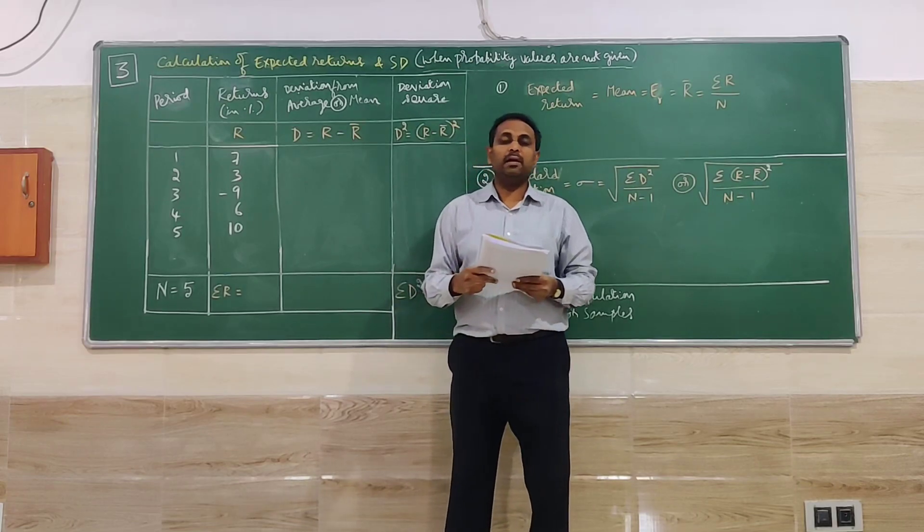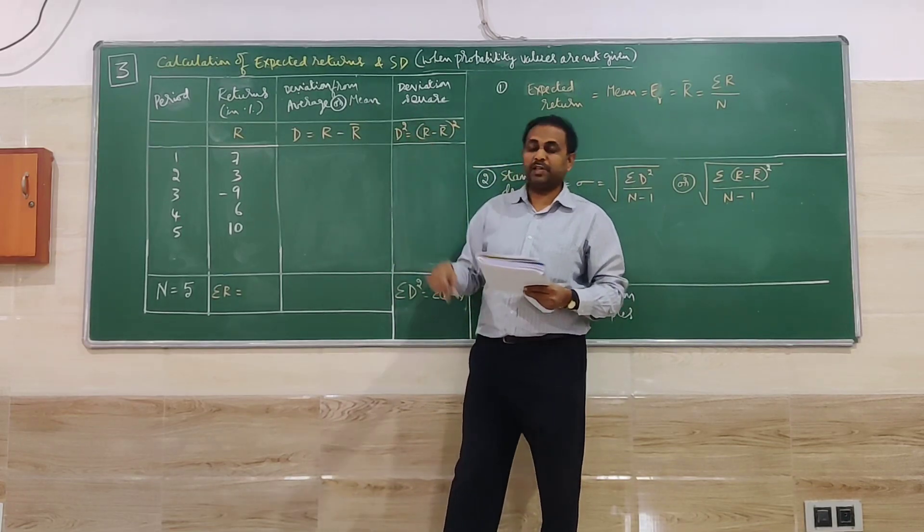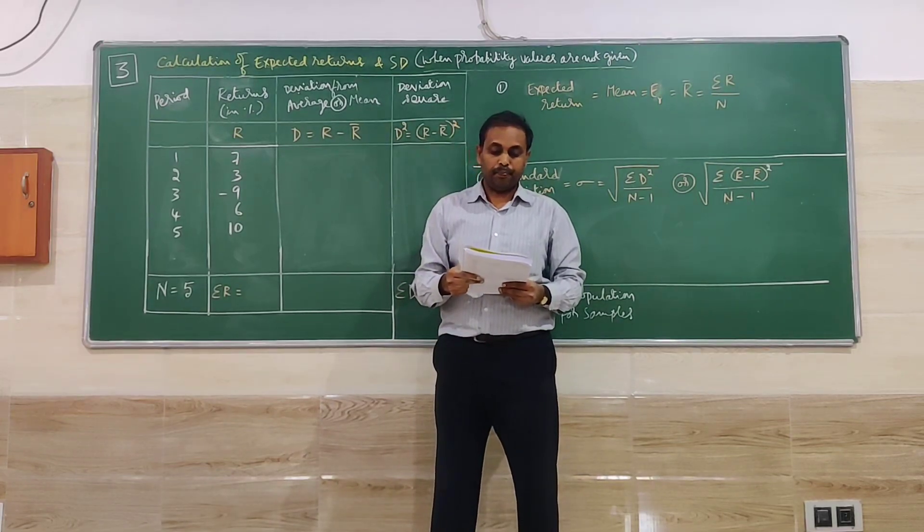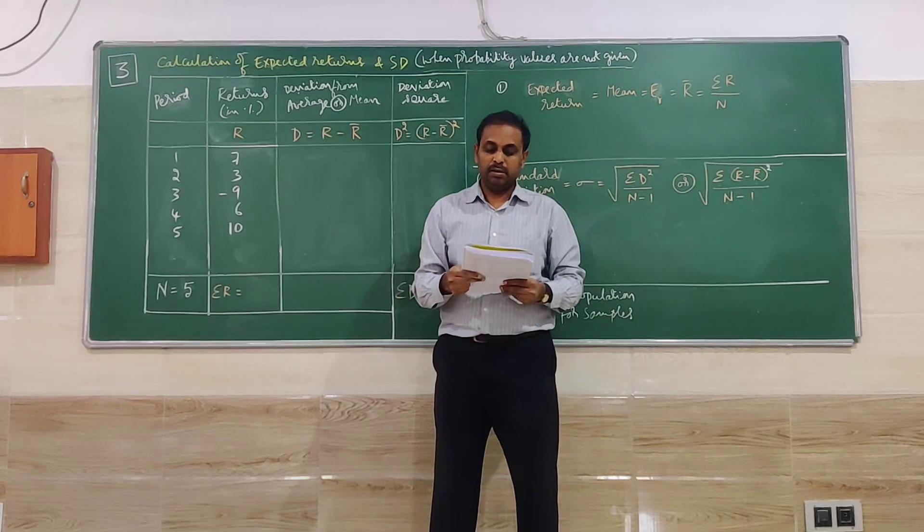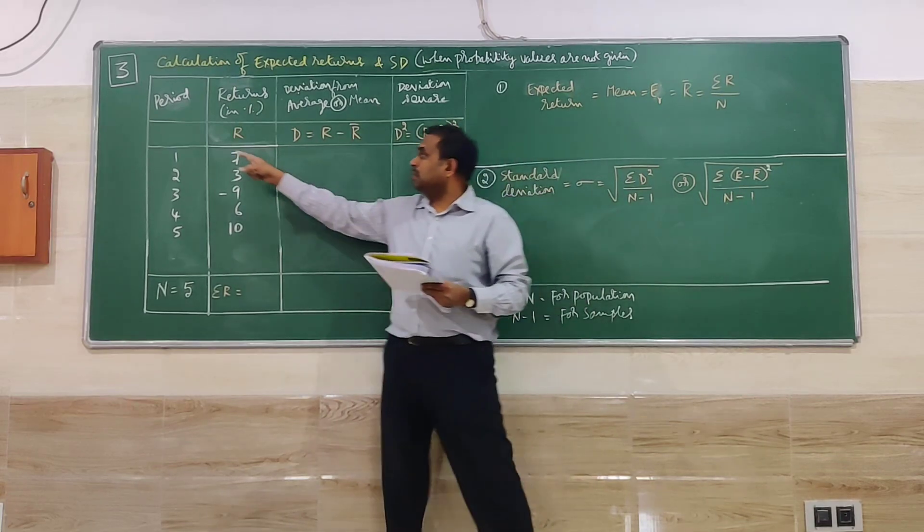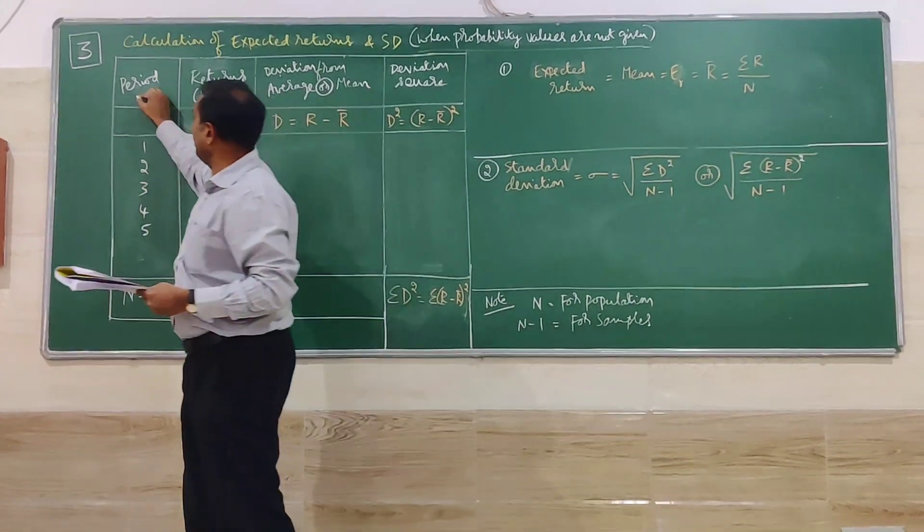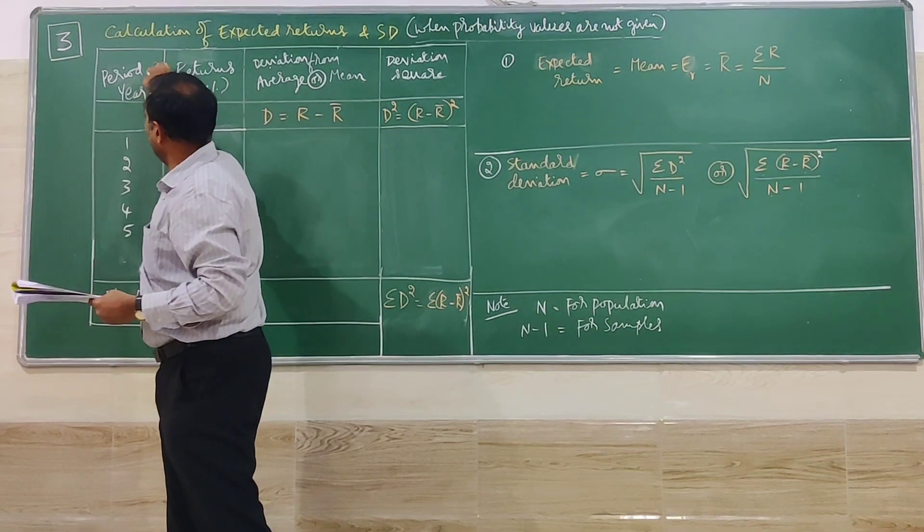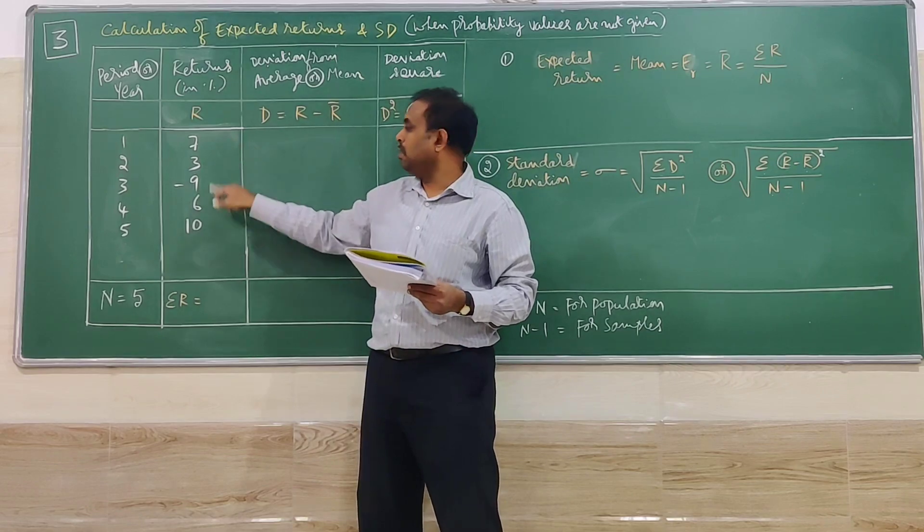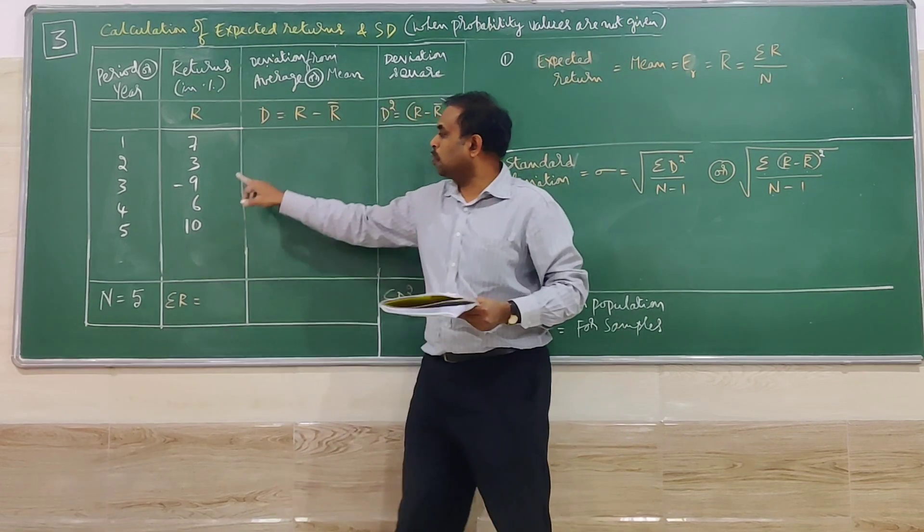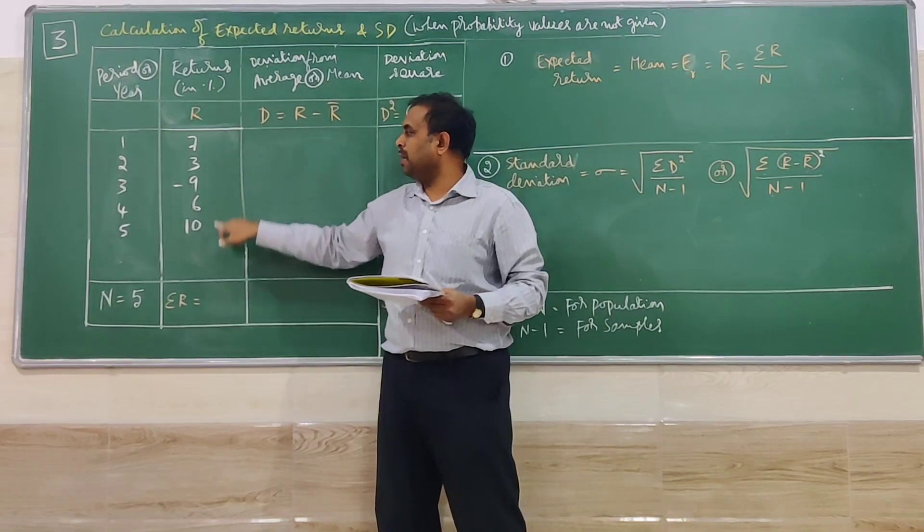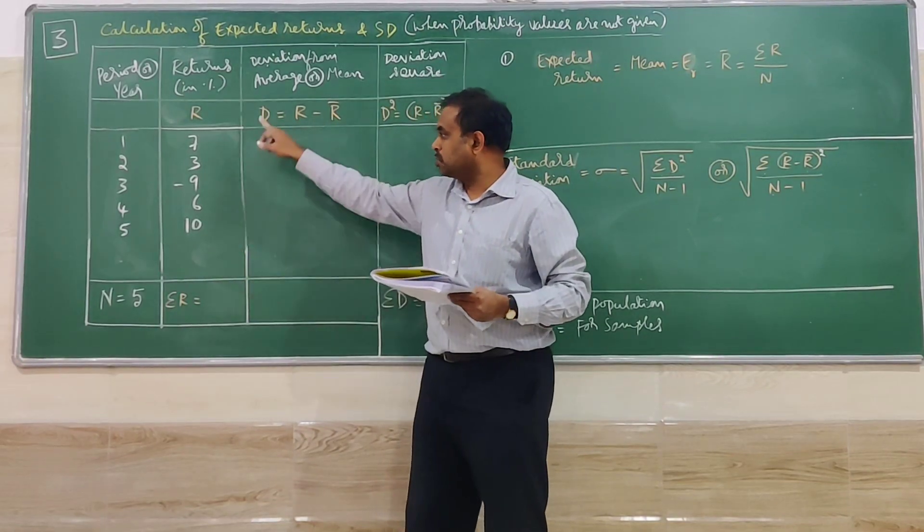The next problem is again connected to the calculation of expected return and standard deviation. The problem goes like this: during the last five years, the returns of a stock are as follows. The years are given here: one, two, three, four, five. The returns are given as 7, 3, -9, 6, and 10.